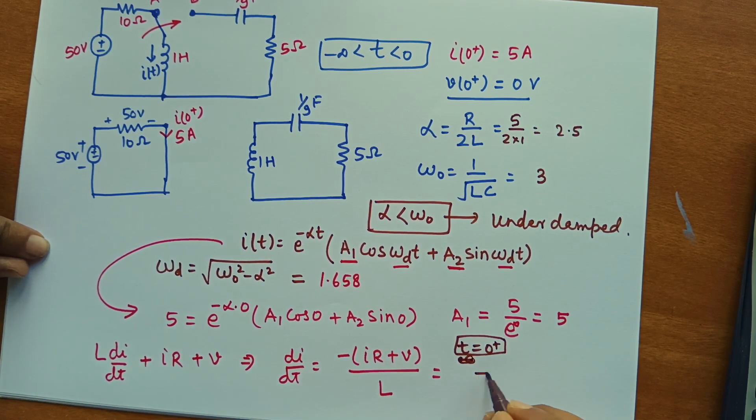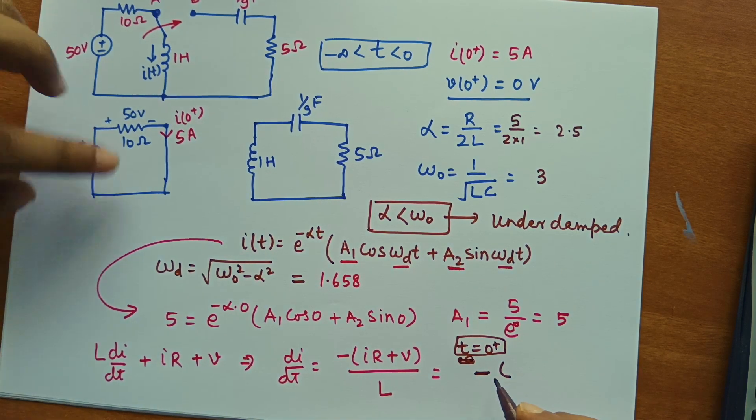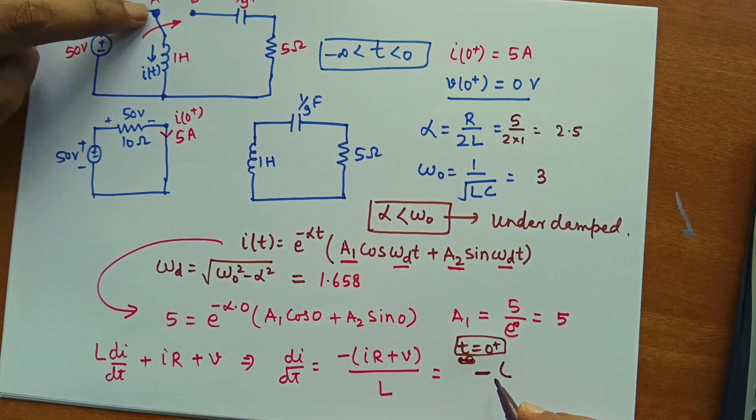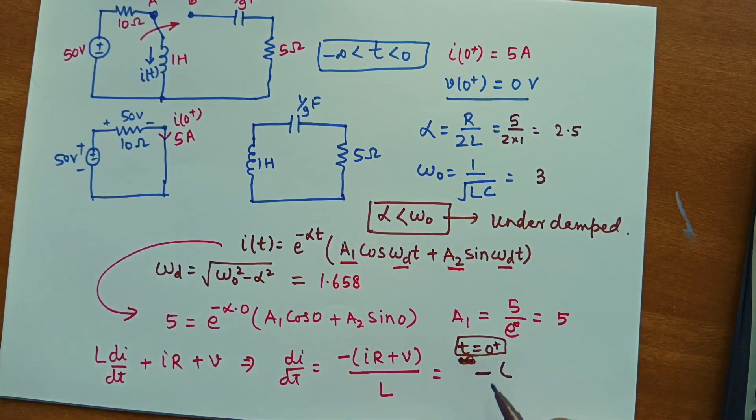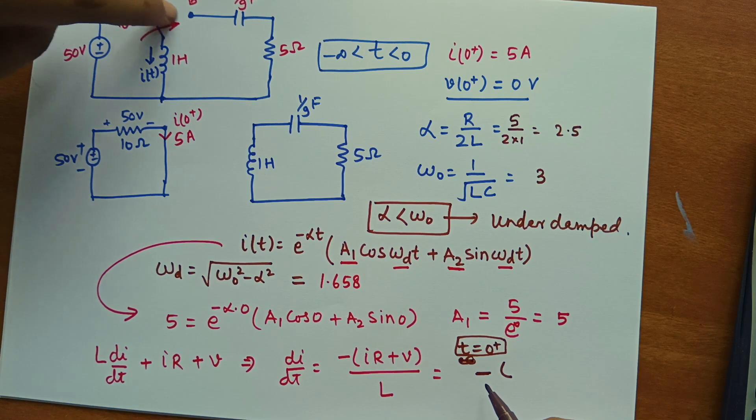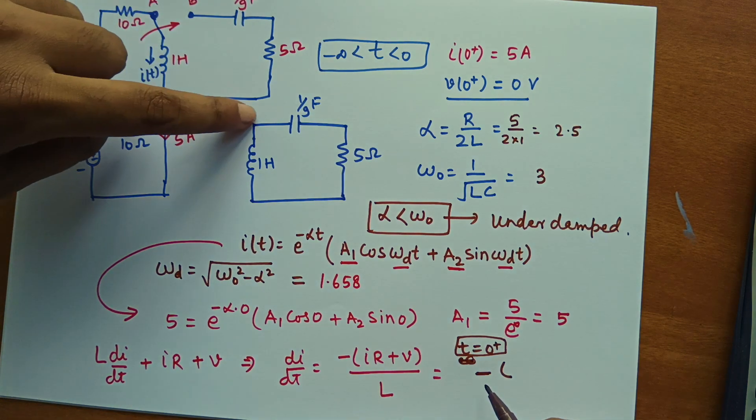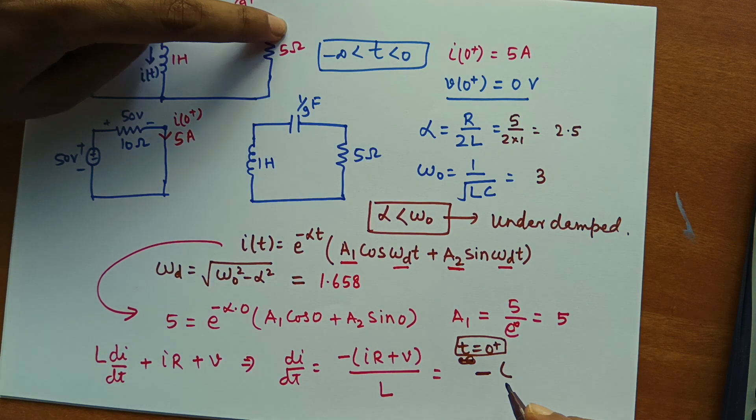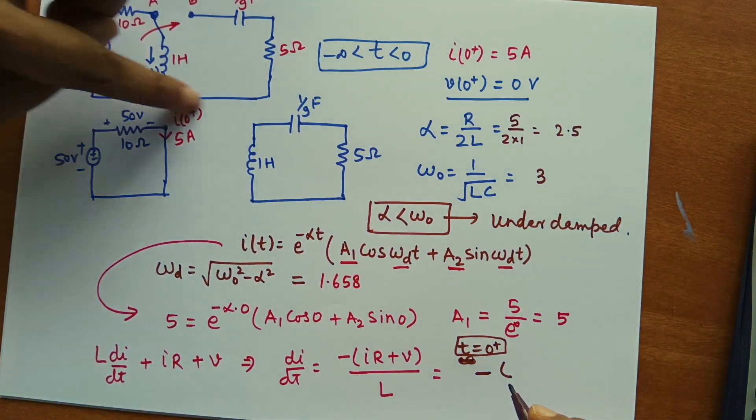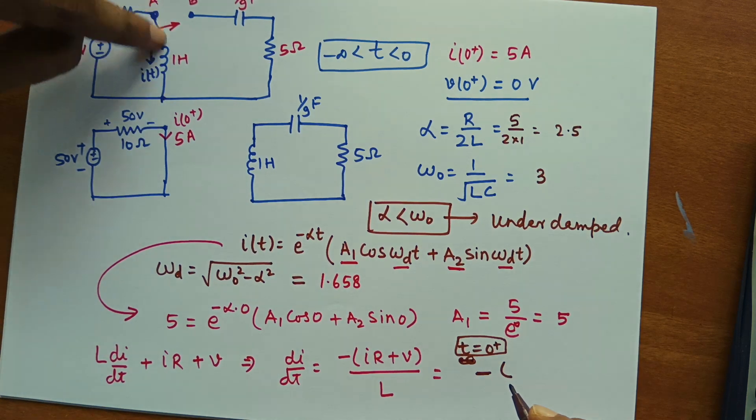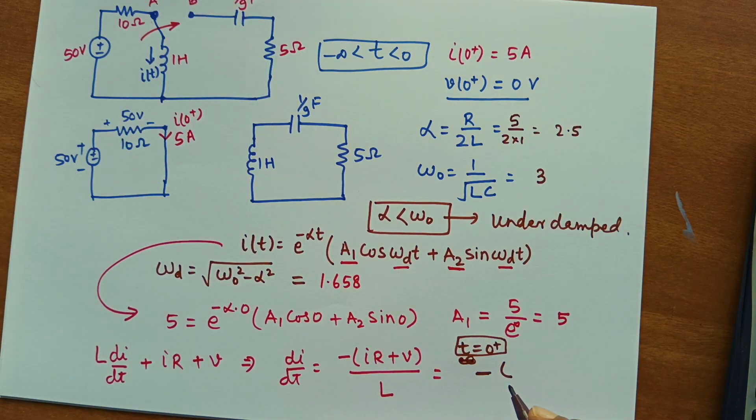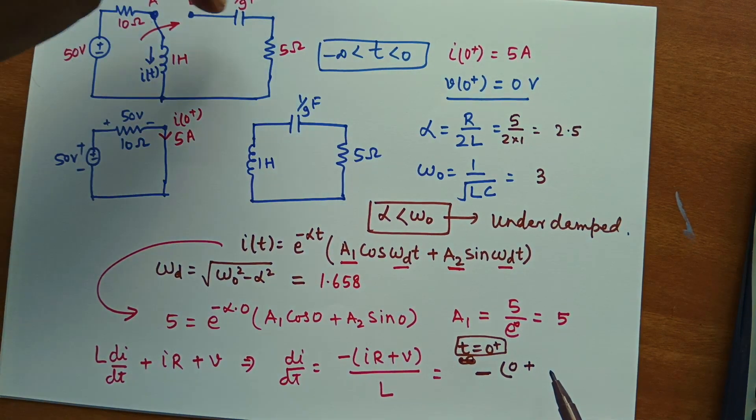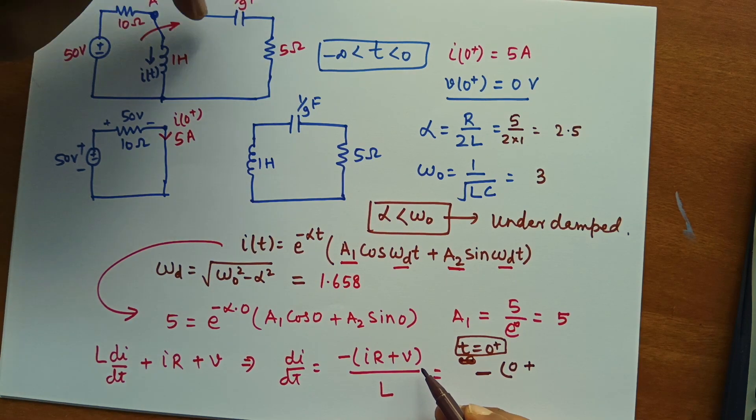So Di by dt is basically minus of IR plus V divided by L. So this value can be calculated as minus at T equal to 0 plus. We are calculating for T equal to 0 plus. So minus immediately after this current will still flow through this inductor. So at T equal to 0 plus means when this switch is connected this side there will not be any current flow this flow through the resistor.